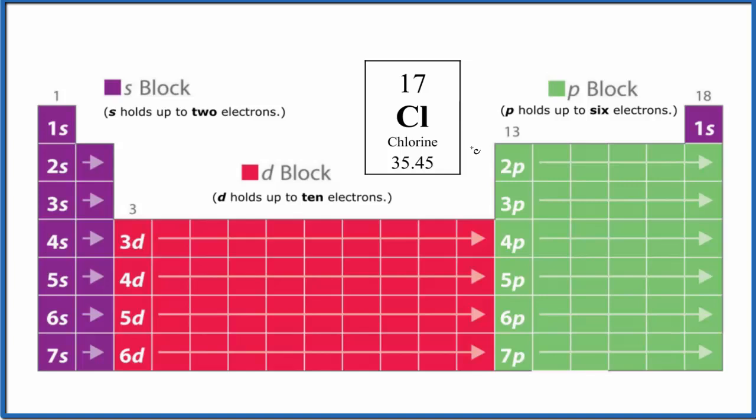Chlorine on the periodic table is right here. We start with the first energy level: 1s1, 1s2. Then we go to the second energy level: 2s1, 2s2.